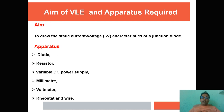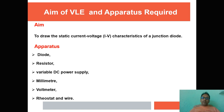The aim of this virtual lab is to study the static IV characteristics of a p-n junction diode. The apparatus required includes a diode, resistor, variable DC power supply, multimeter, milliammeter, voltmeter, and connecting wires for different connections.